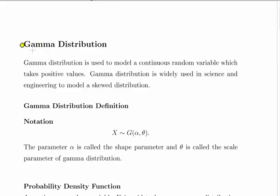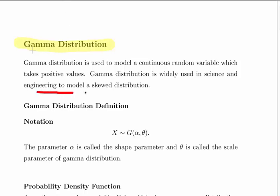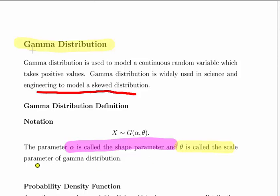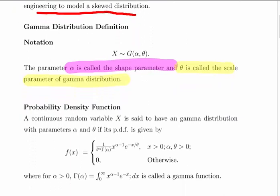In this presentation we are going to look at the gamma distribution, which is commonly used in science and engineering to model skewed distributions. We would describe X as the gamma random variable with parameters alpha and theta, where alpha is the shape parameter and theta is the scale parameter. Note that these may appear with different notations and names in other resources and textbooks.